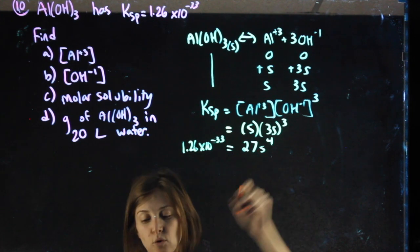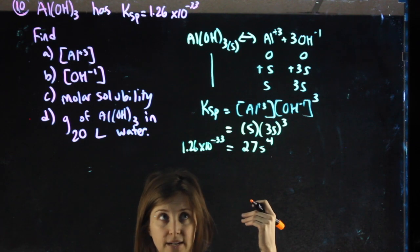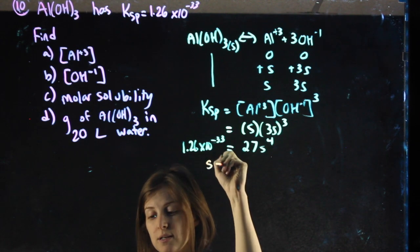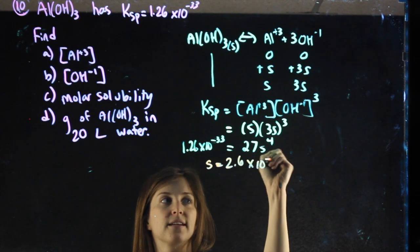To clear out that 4th, I'm going to raise it to the 1 divided by 4 power, having 1 divided by 4 in parentheses. And I get an S of 2.6 times 10 to the negative 9.